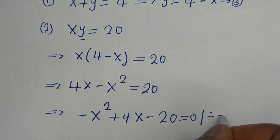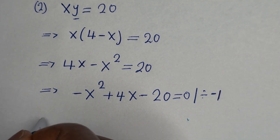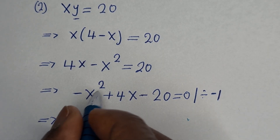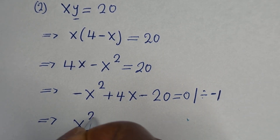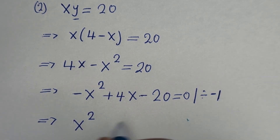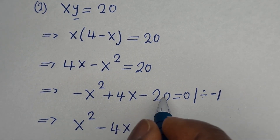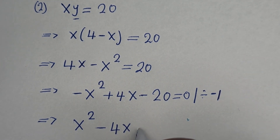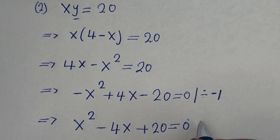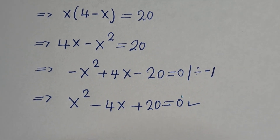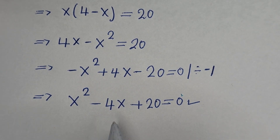So we have minus x squared plus 4x minus 20 is equal to 0. Now let us divide the whole equation by minus 1: minus x squared divided by minus 1 gives x squared, 4x divided by minus 1 gives minus 4x, minus 20 divided by minus 1 gives plus 20, equal to 0. So this is a quadratic equation.